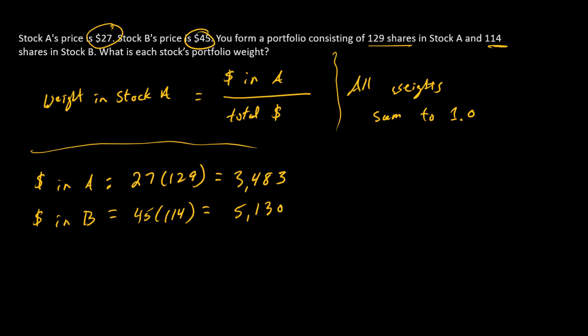Alright. So we've got each of the individual investments. And so now let's go with the total dollars. Total dollars is going to be the sum of those first two numbers. So that's 8,613.